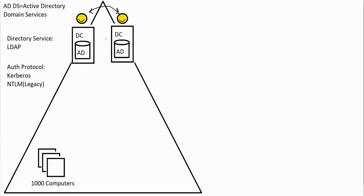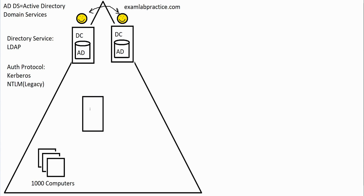Our domain must have a name. Usually you name your domain after your company, and many people name their domains based on their web presence. For example, a domain might be called examlabpractice.com. You need a server in your domain that can associate names and IP addresses together — that server is called a DNS server, and it holds a DNS database.